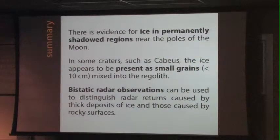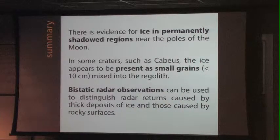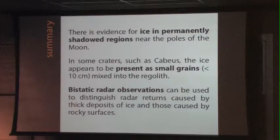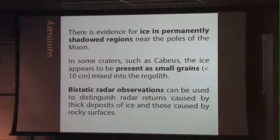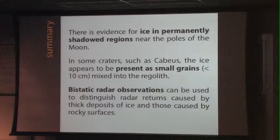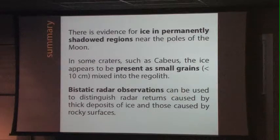To wrap up: I think we all agree that there is some ice in the permanently shadowed regions on the Moon. But looking at Cabeus in particular, it seems like it might be present as pretty small grains — at least not observable with radar. However, perhaps some of these small craters do contain quite a bit of water ice, and if we can get bistatic radar observations set up, we might be able to detect large deposits of water ice. Thanks for your attention.